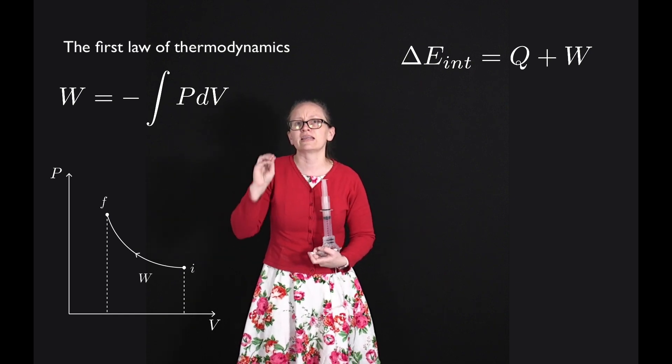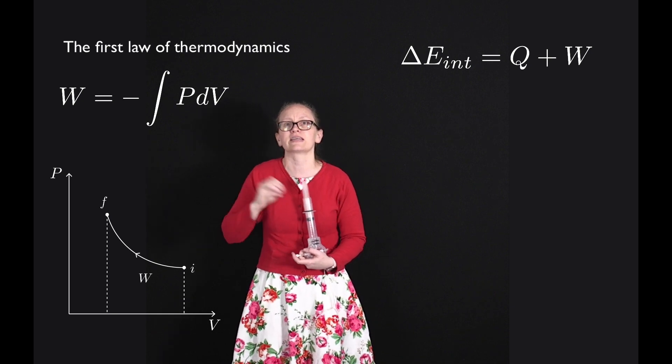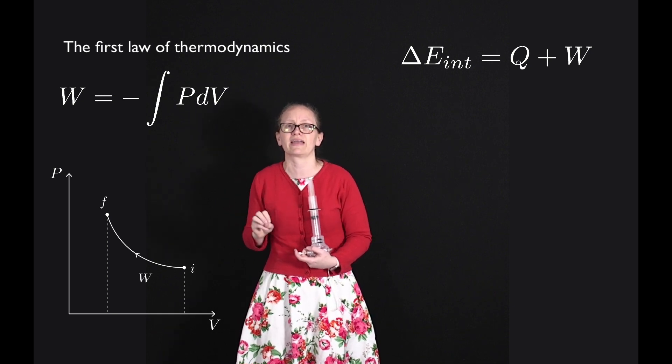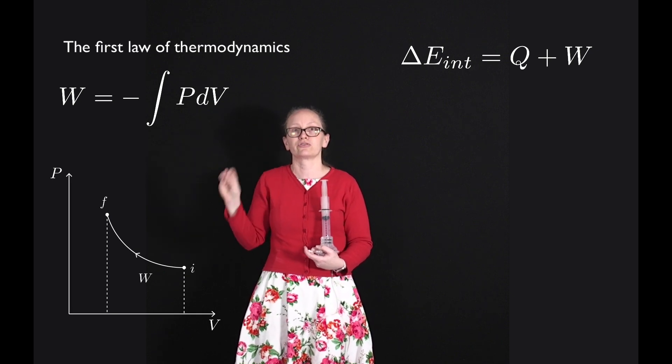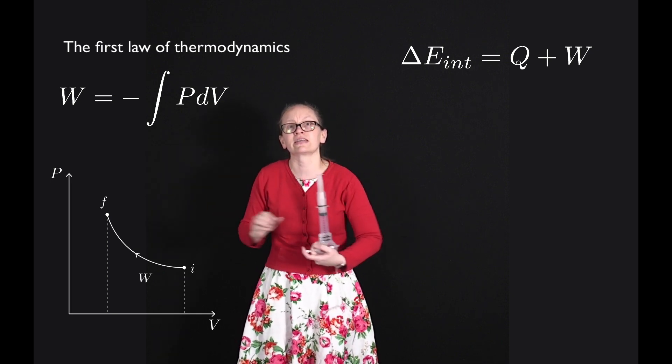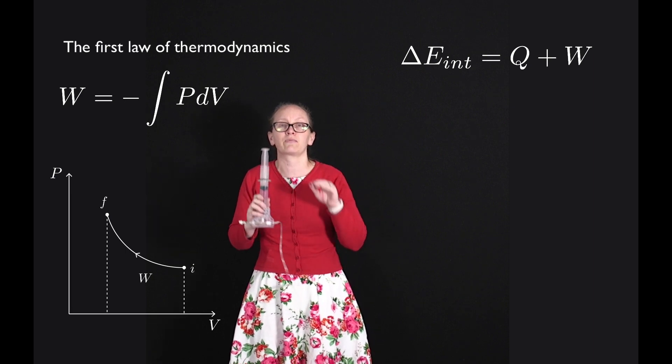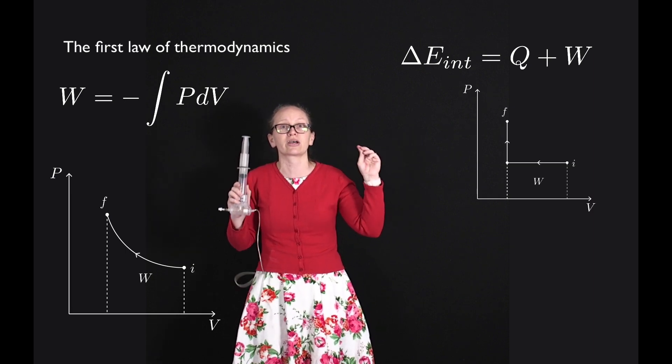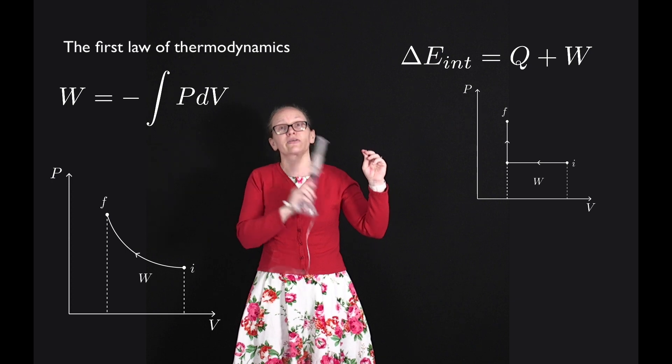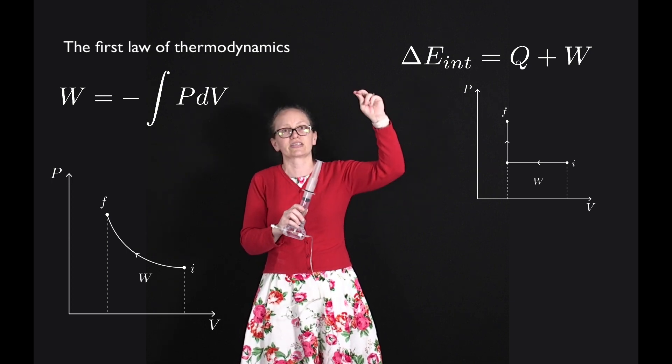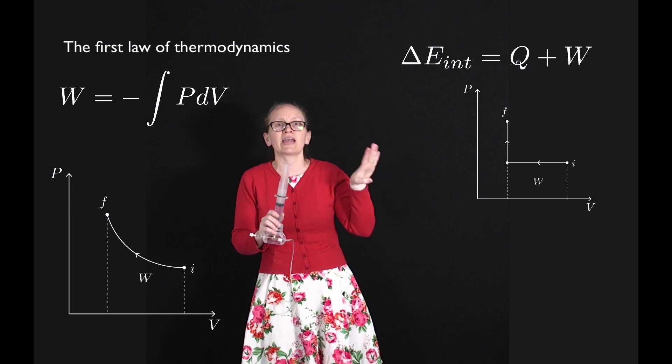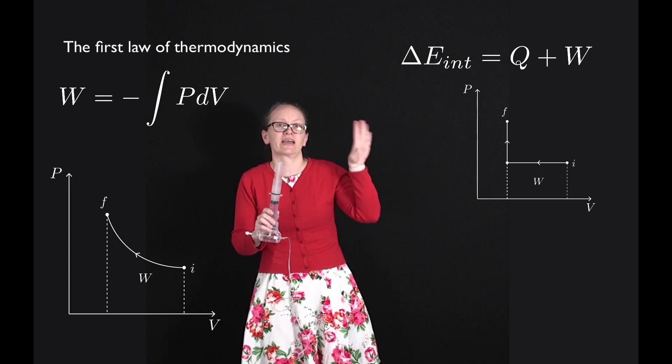Now one of the interesting results of this is that the amount of work done doesn't depend on just the initial and final state, it also depends on how we get between those two states. So let's firstly consider the case where we initially keep the pressure constant but decrease the volume of a gas and then we'll keep the volume constant and increase the pressure. Now the area under that curve is fairly small.